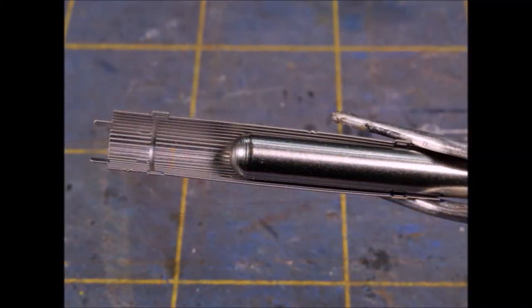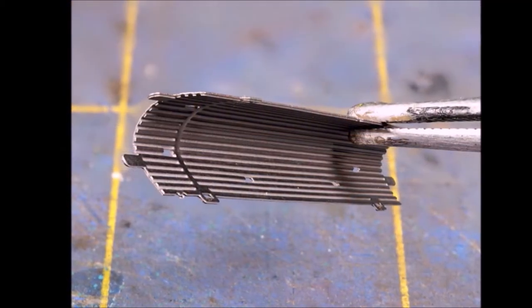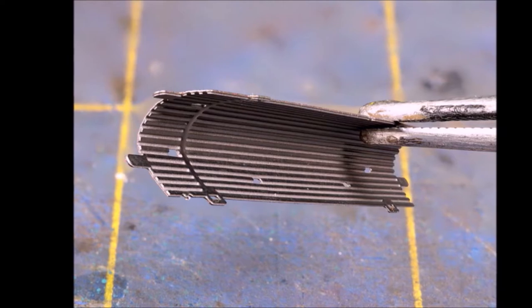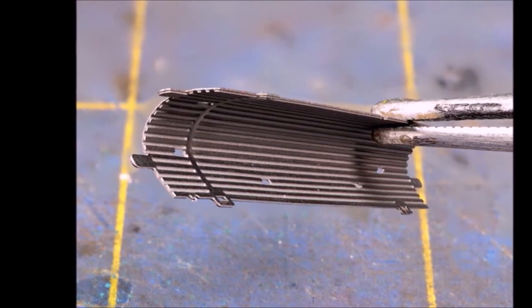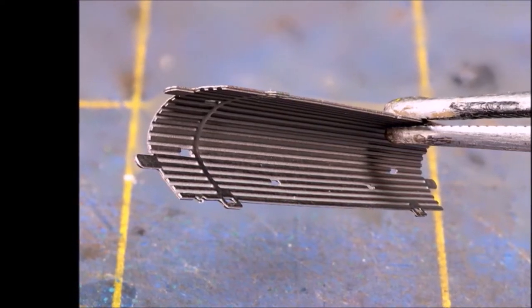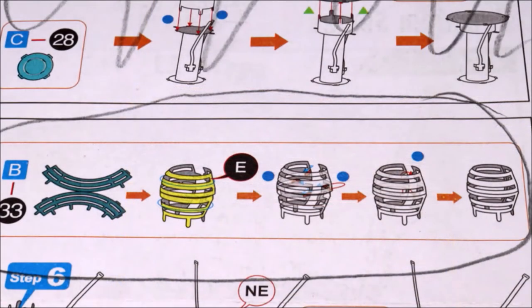Now what these new tools really shine at is making round things. In this particular case it's part of a leg. Look at that - look how nice and smooth that bend is. And of course there's a number of different diameters and sizes.